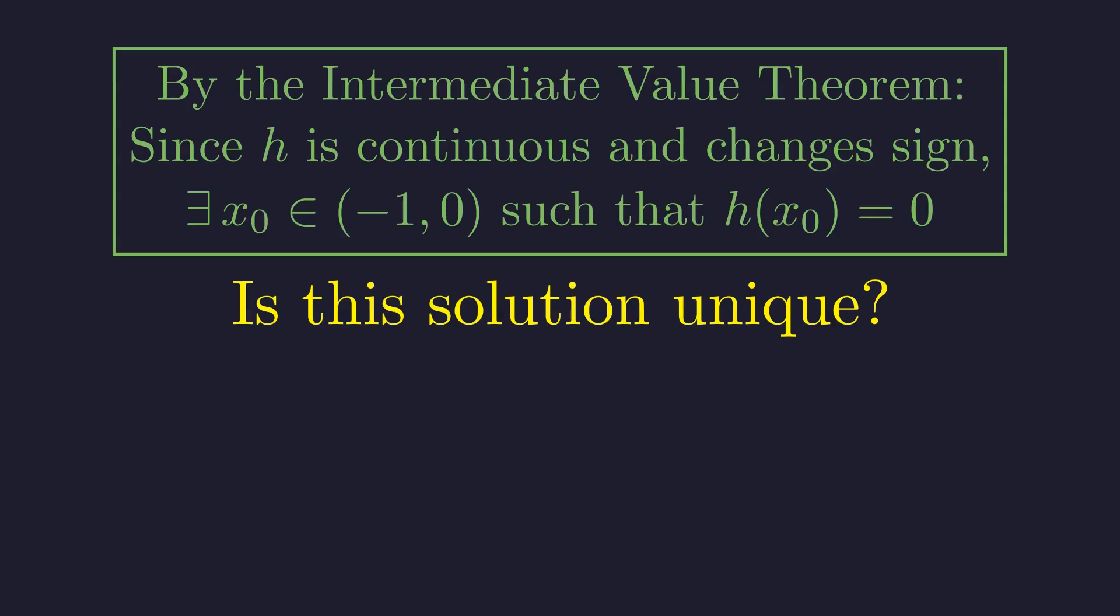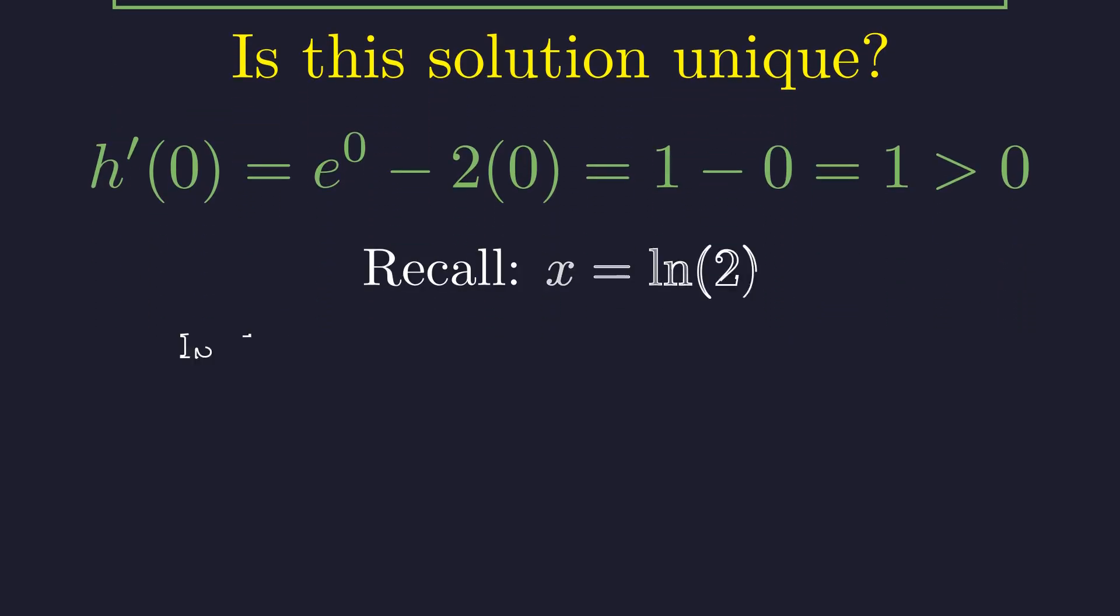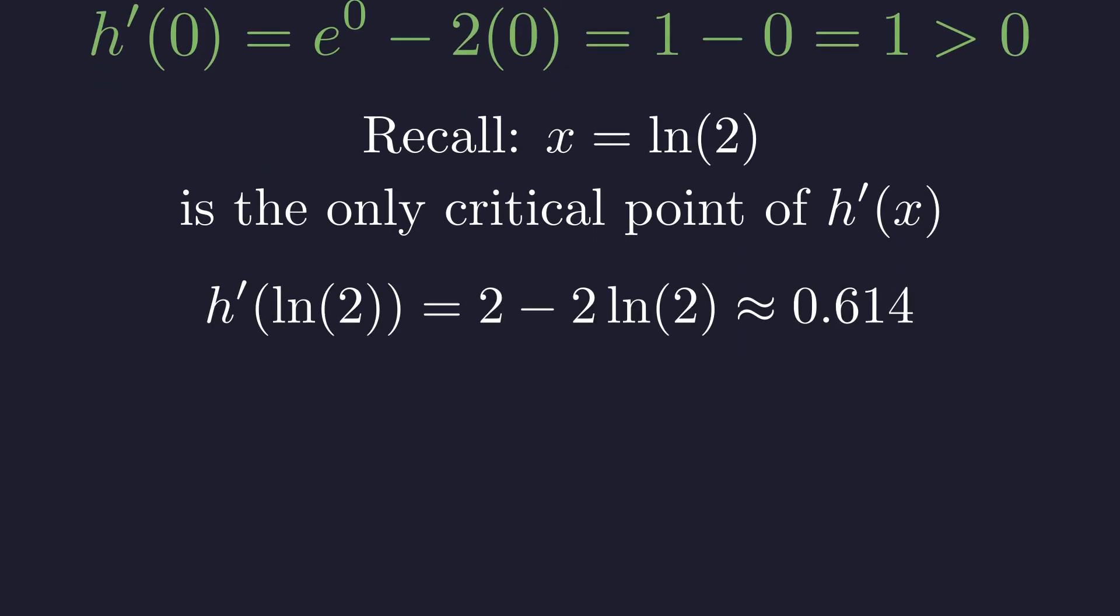But is this solution unique? We need to check. Let's reconsider the derivative. h prime of x equals e to the x minus 2x. In part A, our analysis to find its minimum on the positive numbers actually revealed its global minimum for all real numbers. Since x equals ln of 2 is the only critical point of h prime, it must be the global minimum.